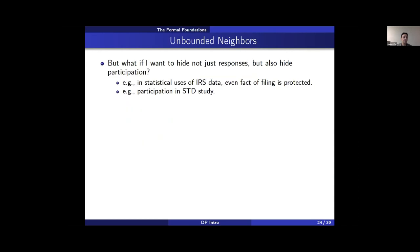Differential privacy protects the response of any individual, but what if we want to hide not just their response, but whether they participated in the survey in the first place? For example, using IRS data for statistical purposes, you need to protect not only the contents of tax returns but also whether someone even filed a tax form at all. Similarly, if you run an STD study, someone's participation could already be revealing, regardless of what information they provided.